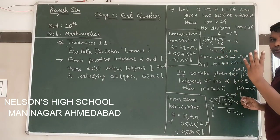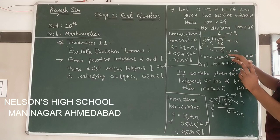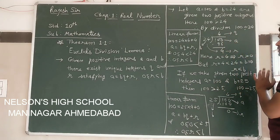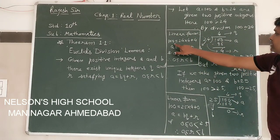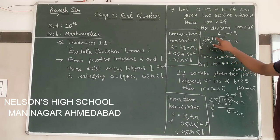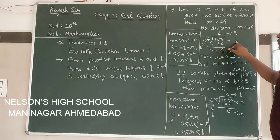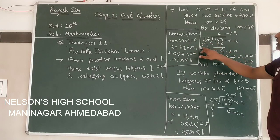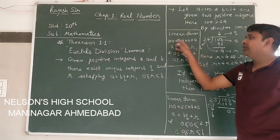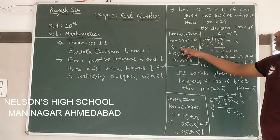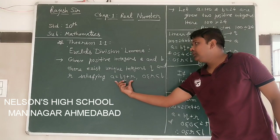We now have four integers: 100 and 24 were given, and 4 (quotient) and 4 (remainder) we found by division. Now we want to convert this into linear form. In linear form: 100 equals 24 into 4 plus 4. What we have done is: a equals divisor b into quotient q plus remainder r. That is, 24 fours are 96, plus 4. So this is the form a equals b·q plus r — this part of the theorem we get.